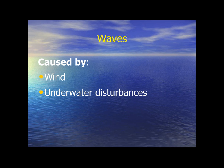Waves are most commonly caused by wind. Wind-driven waves are called surface waves, and they're created by the friction between the wind and the surface water. As the wind blows across the water on an ocean or a lake, the disturbance causes a wave crest.